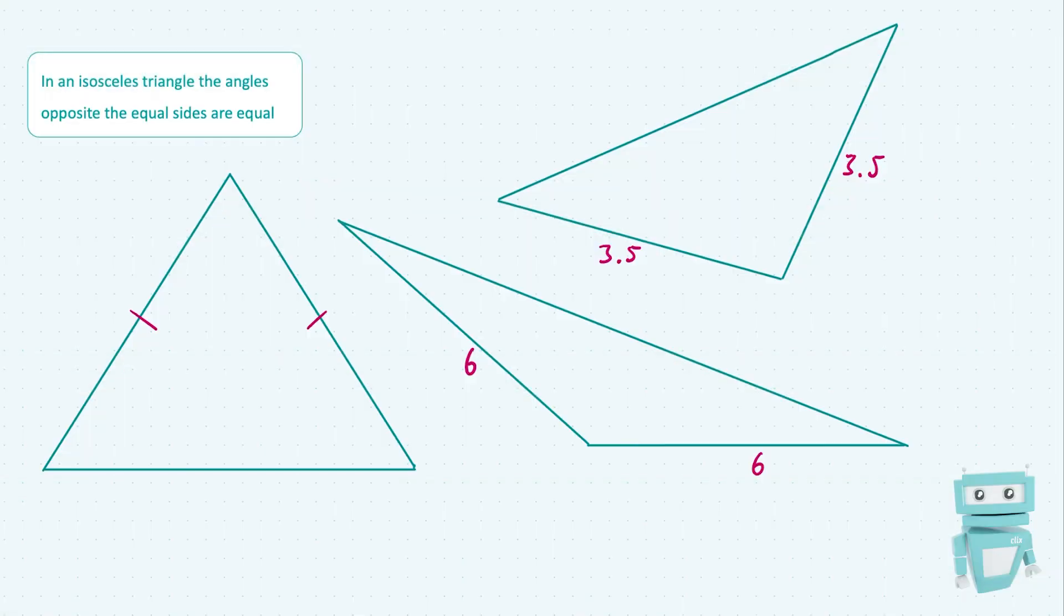Here we have a few different isosceles triangles, and our goal here is going to be to show that in any isosceles triangle, the angles opposite the equal sides are equal.